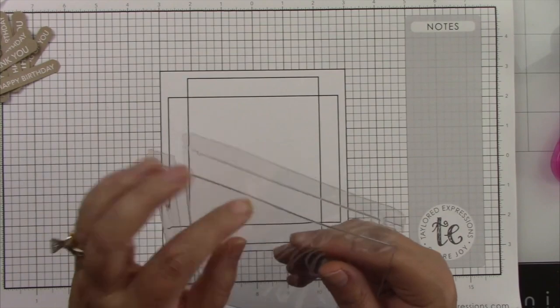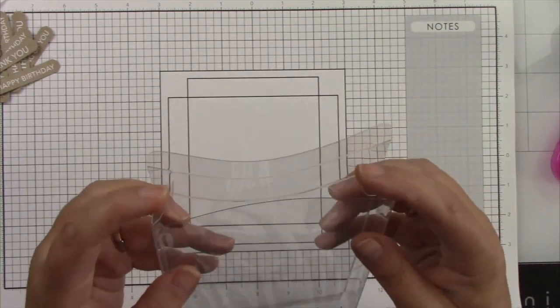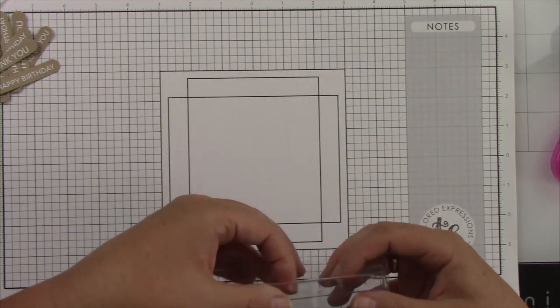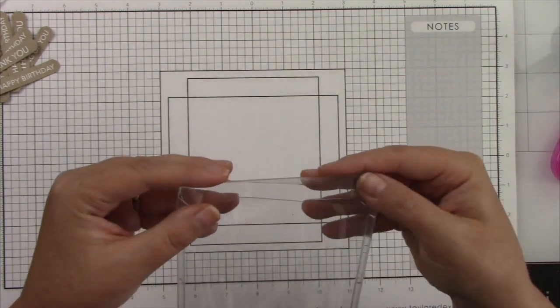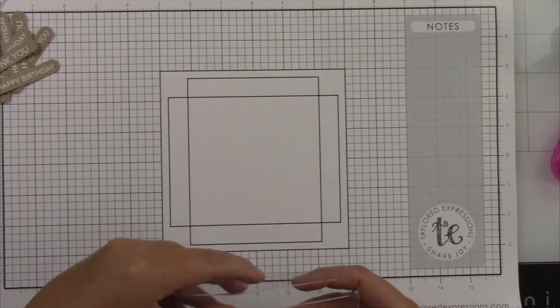Okay, so here is the clear card box. You're just going to fold it on the score lines and super easy to put together. Fold everything in, close up one end, and then we can pop all of the cards and envelopes and everything inside of this card box.